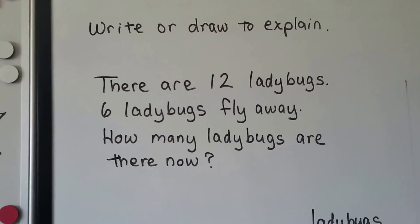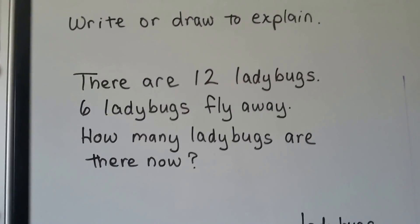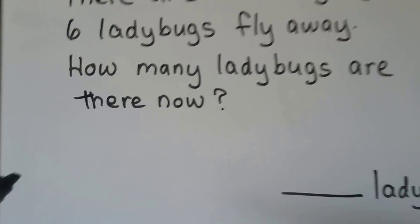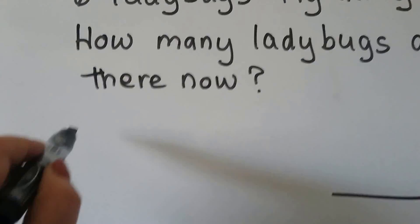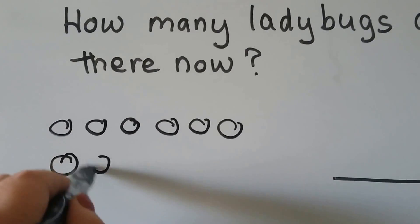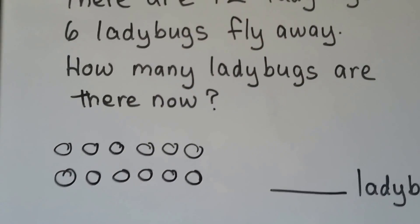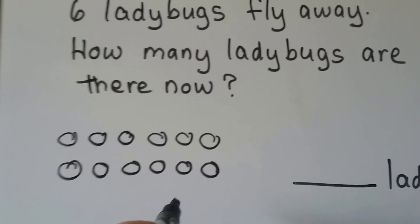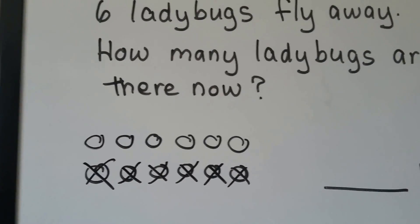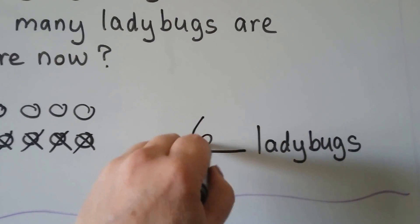We can write or draw to explain. There are 12 ladybugs. 6 ladybugs fly away. How many ladybugs are there now? We can draw circles for the ladybugs — there are 12, so we make 12 circles. 6 ladybugs fly away, so we cross off 6: 1, 2, 3, 4, 5, 6. How many are left? 1, 2, 3, 4, 5, 6. There are 6 ladybugs now.